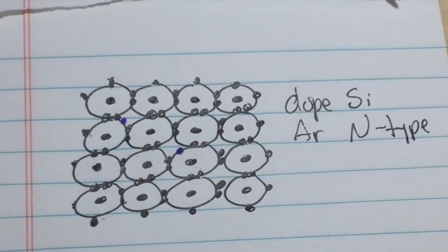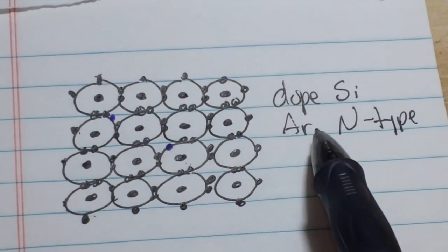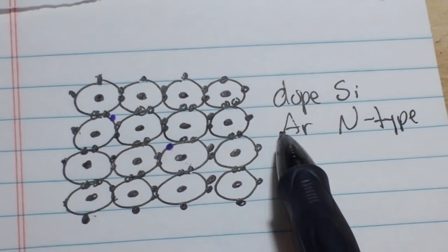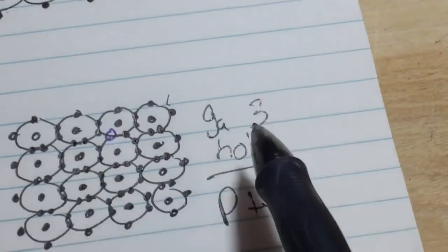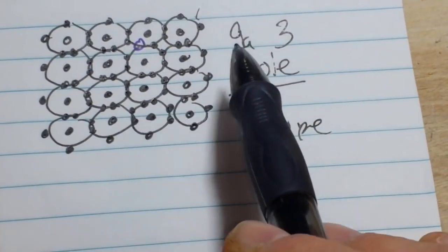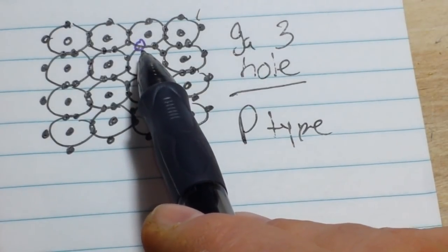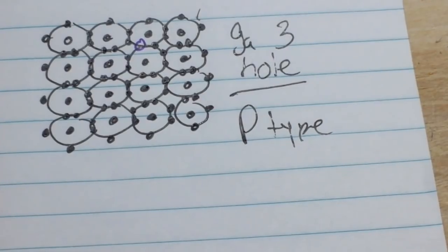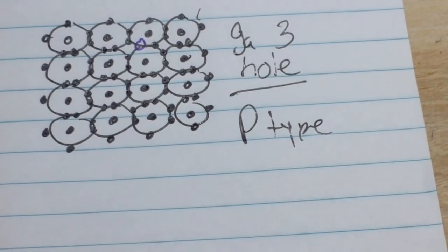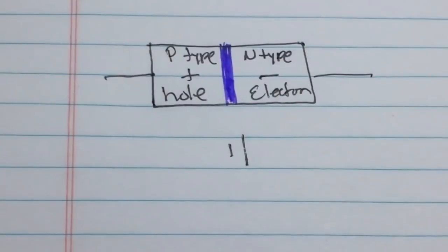P stands for positive, by the way. So now we have our two types of dope silicon. We have the N-type, which has extra electrons. We have the P-type, which has not enough electrons, what we call holes. Confusing enough yet? Don't worry. It gets better. Or worse, depending on how you look at it.